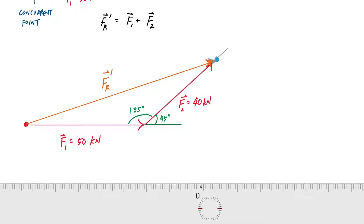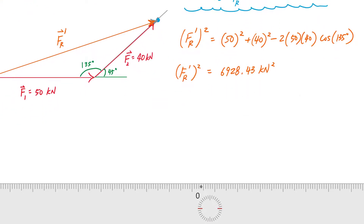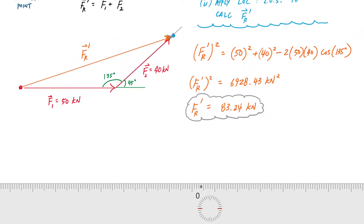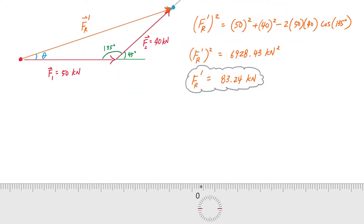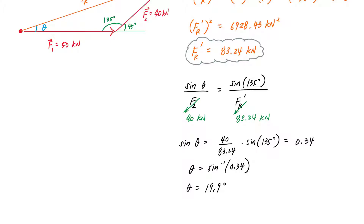With two sides and the included angle, I use the law of cosines to get the magnitude of FR prime. Taking the square root gives FR prime equals 83.24 kilonewtons. For the direction, I need angle theta. Using the law of sines with F2 equal to 40 kilonewtons and FR prime equal to 83.24 kilonewtons, I solve to get theta equals 19.9 degrees.